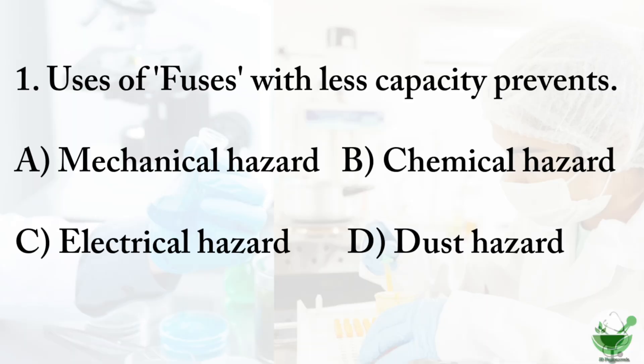Question number one: fuses with less capacity prevent — option A: mechanical hazard, option B: chemical hazard, option C: electrical hazard, option D: dust hazard. The correct option is C, electrical hazard. Electrical hazards refer to the potential dangers and risks associated with electrical systems. An electric fuse is a safety device which limits the current flowing in an electric circuit.